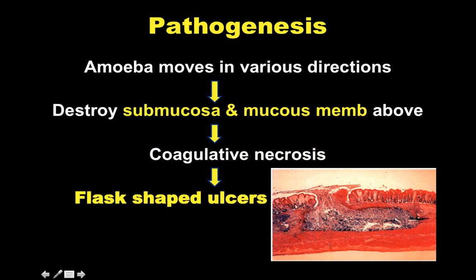These amoebae move laterally, destroying the submucosa and the overlying mucous membrane, resulting in coagulative necrosis and formation of flask-shaped ulcers. The base of this ulcer is formed by the muscular coat, filled with necrotic slough, and the superficial part is the muscularis mucosa. The deeper part is limited to the submucosa, and further extension can lead to complications when it passes through the muscular layer into the portal circulation, being carried to the liver, resulting in amoebic abscesses.